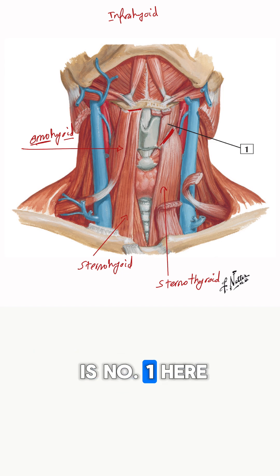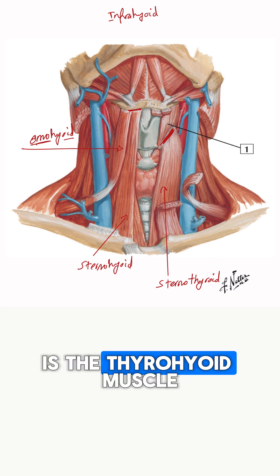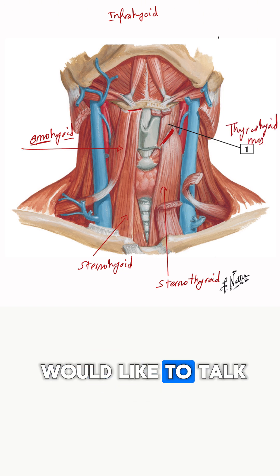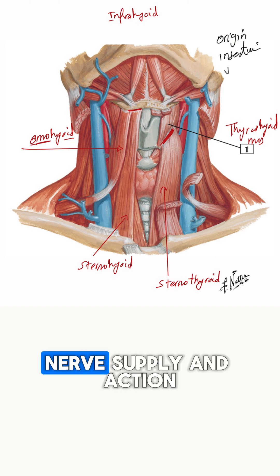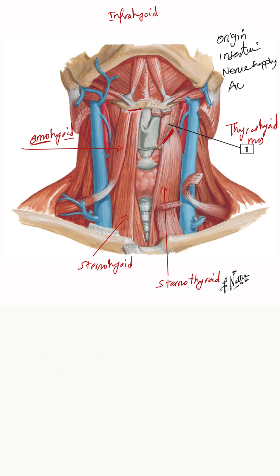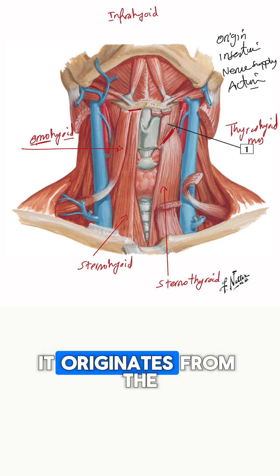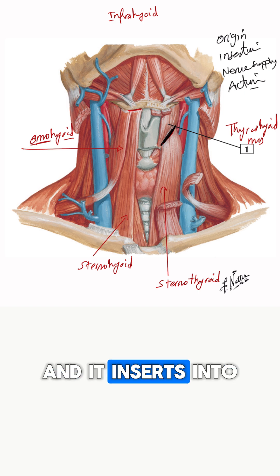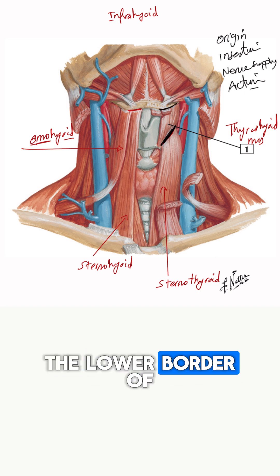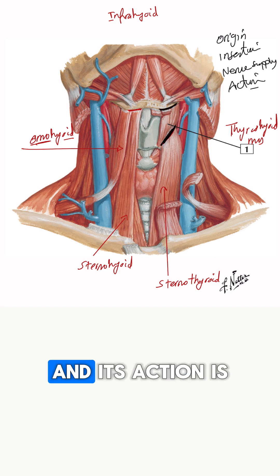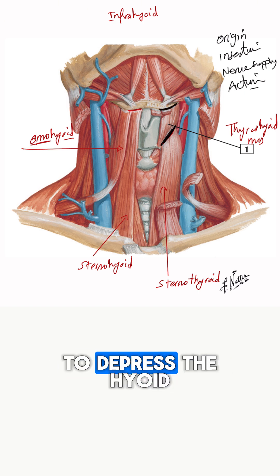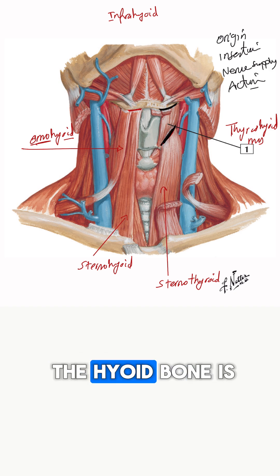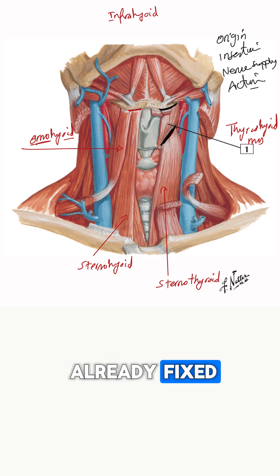The fourth muscle is the thyrohyoid muscle. Its origin, insertion, nerve supply, and action: it originates from the oblique line of the thyroid cartilage and inserts into the lower border of the hyoid bone. Its action is to depress the hyoid bone, or to elevate the thyroid cartilage if the hyoid bone is already fixed.